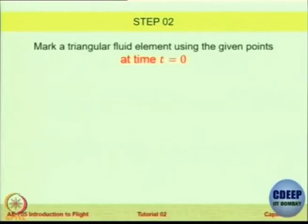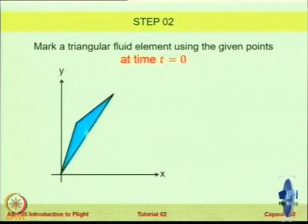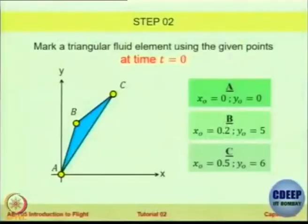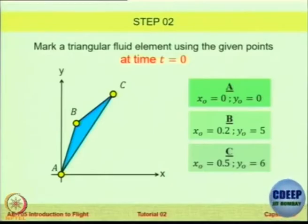In the next step, we look at this particular flow field and mark a fluid element at time t equal to 0 — just some element with vertices A, B, and C. You can note down these values: A is at x0, y0 equal to 0, 0. At time t equal to 0 we take a snapshot and see a triangular element with three vertices A, B, and C whose coordinates are mentioned. This is the position of the fluid particles at time t equal to 0.